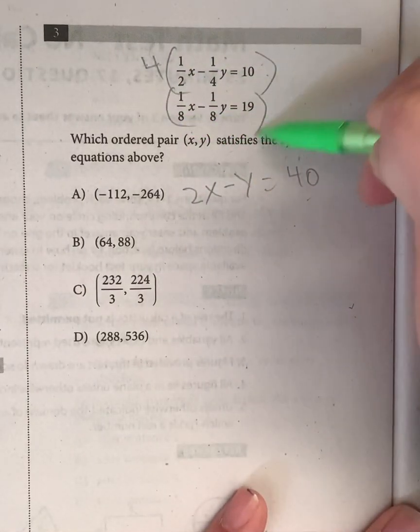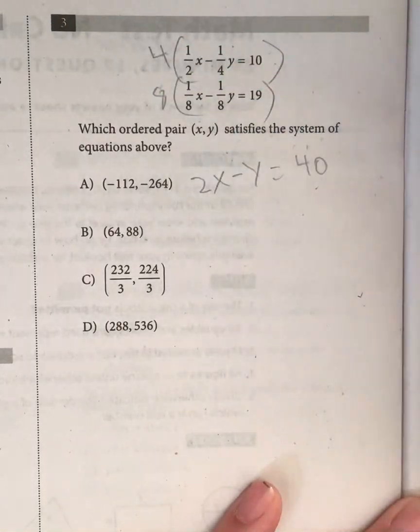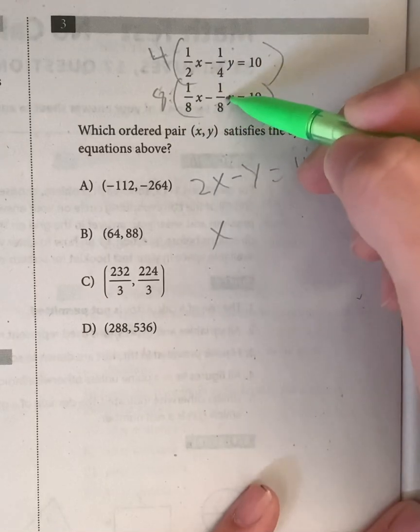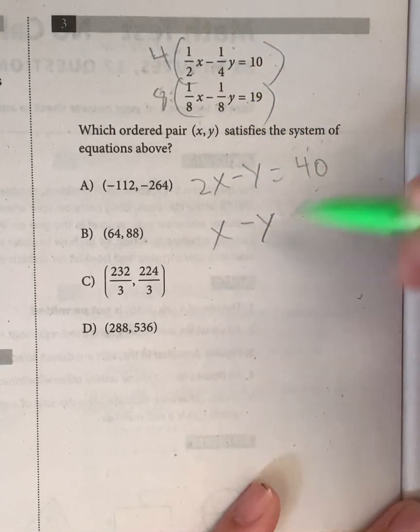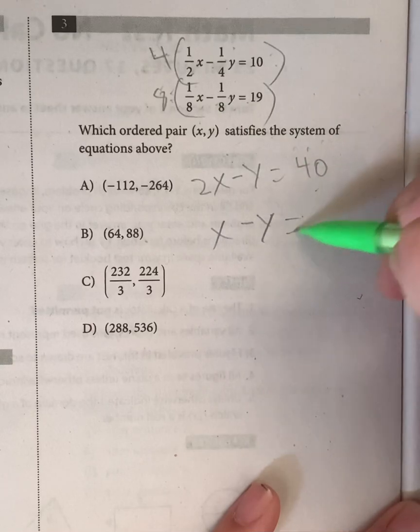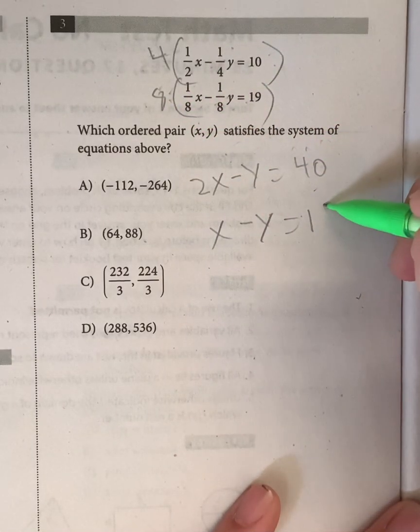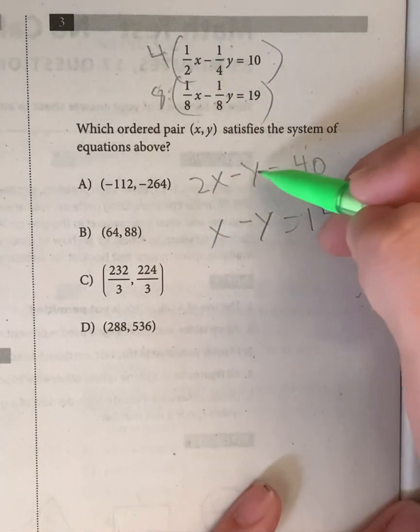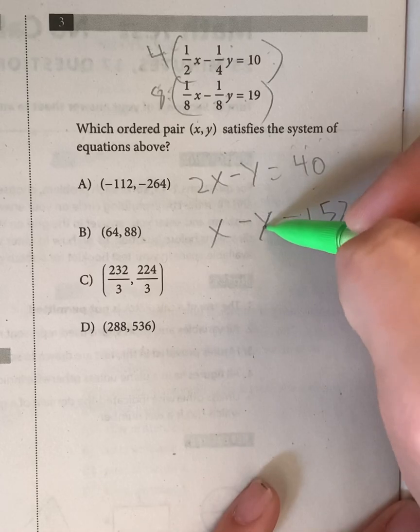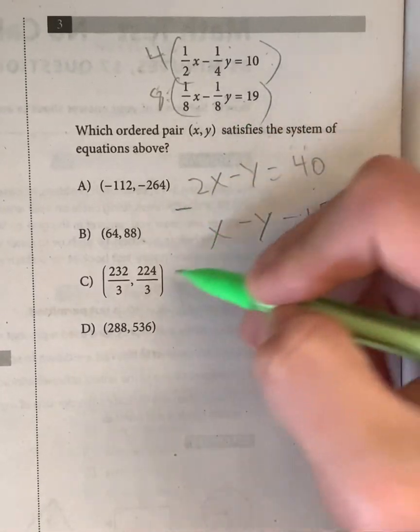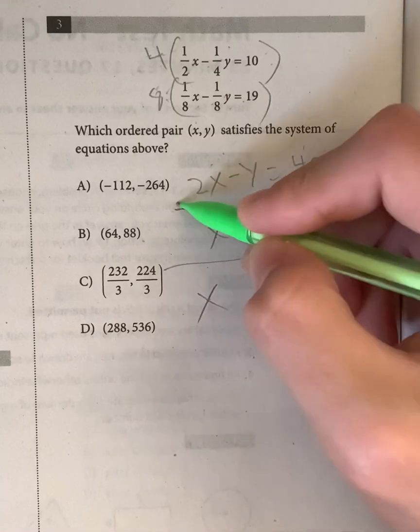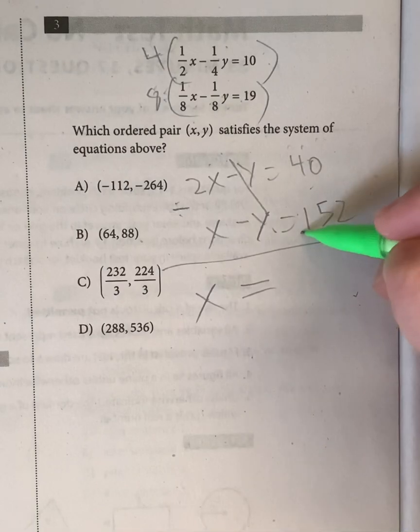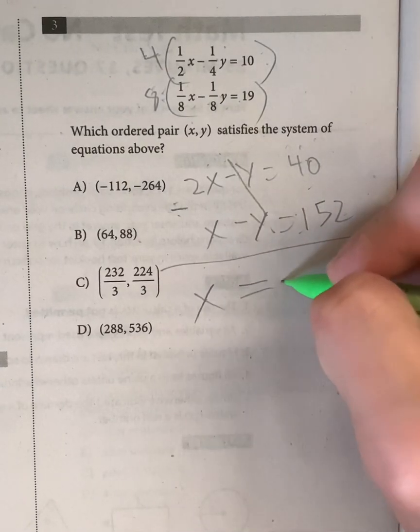And next over here, our least common multiple is going to be 8. 8 times 1/8 is x. 8 times -1/8 is also 1, so that's y. So x - y = 19 times 8, which is going to give us 152. And now, since we have this, we can use elimination, because we have y and y on both equations. So we subtract. 2x - x gives us x. -y minus -y cancels out, so that's 0. And that's equal to 40 - 152, which is equal to -112.